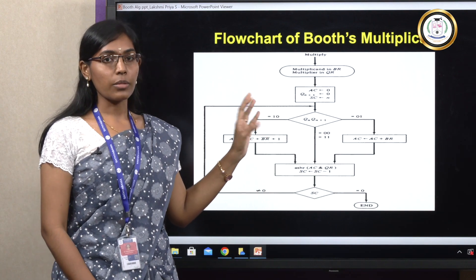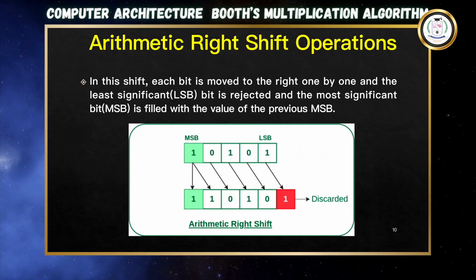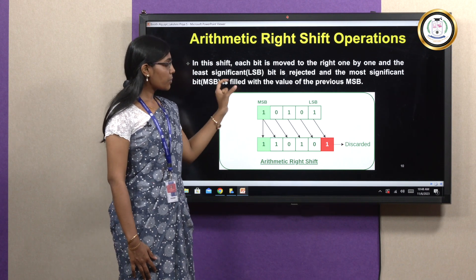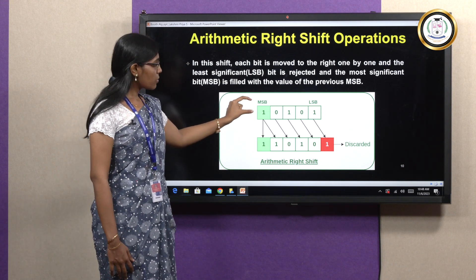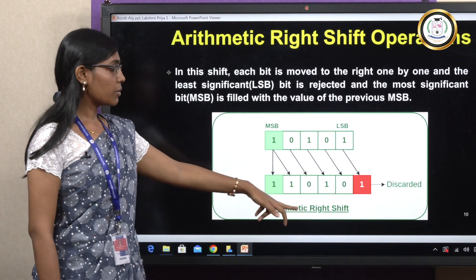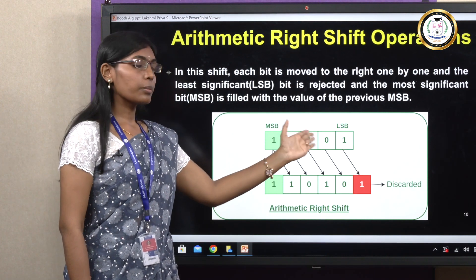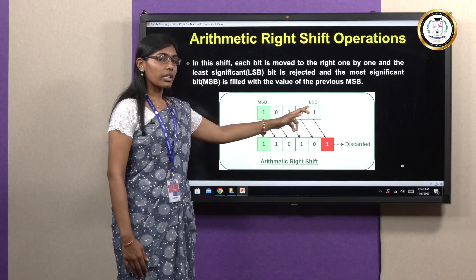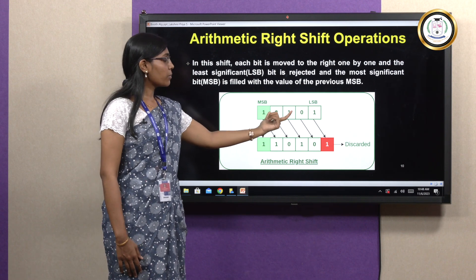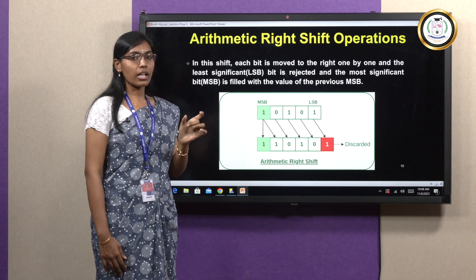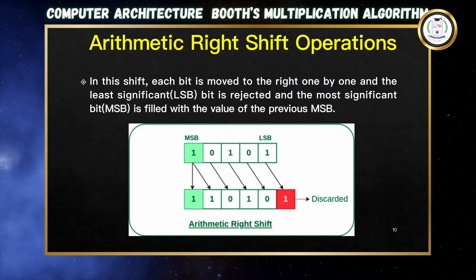This is how Booth's multiplication algorithm works. The arithmetic shift right operation preserves the MSB (sign bit) in its original position, shifts all bits one position to the right, and discards the LSB. For an n-bit register the output remains n bits after discarding the shifted-out last bit.